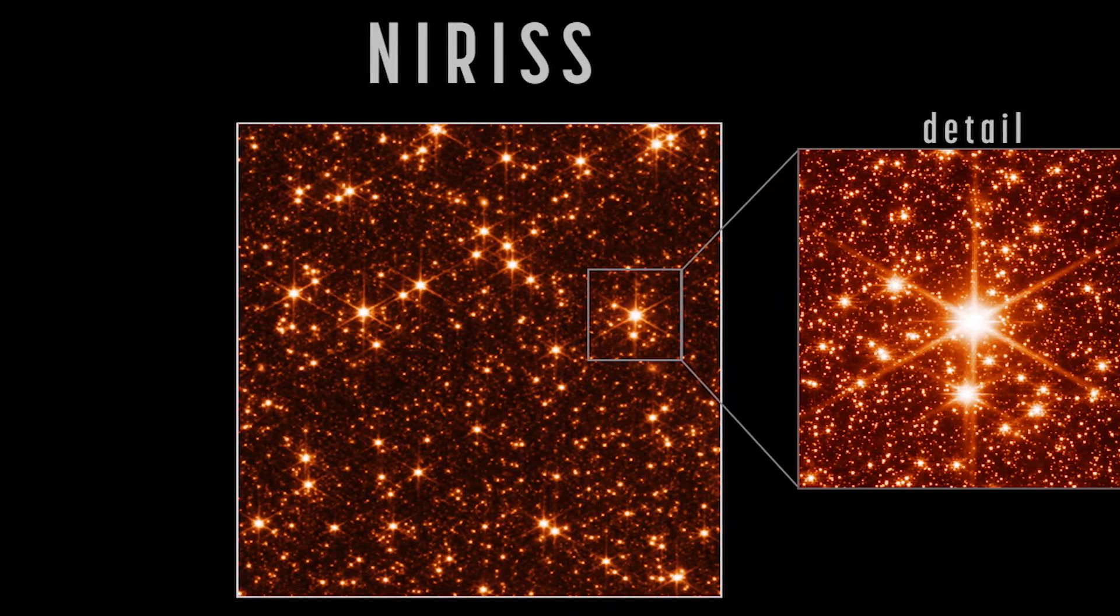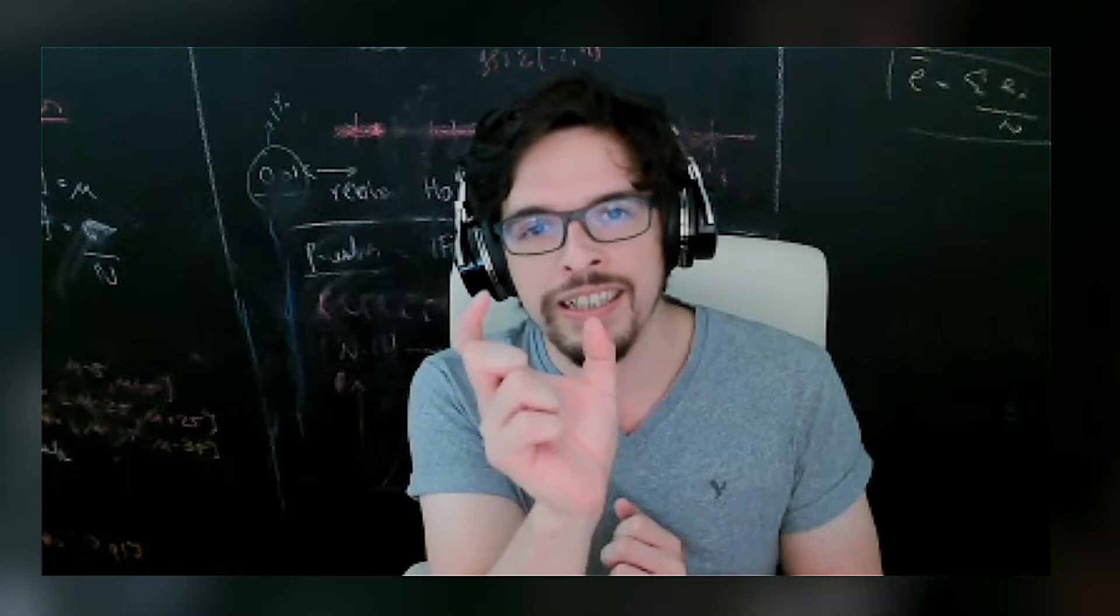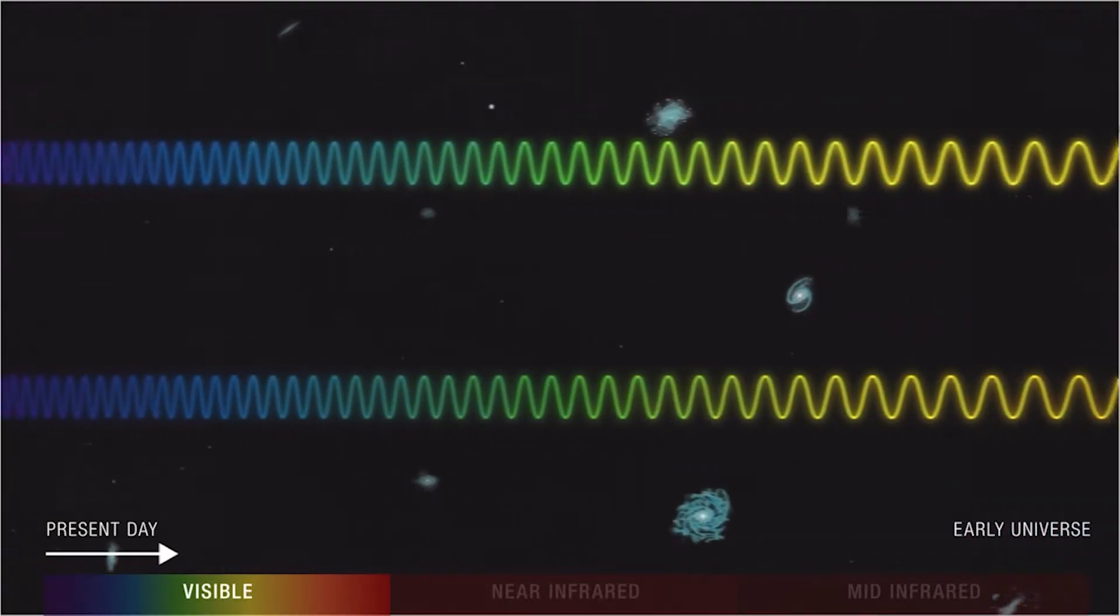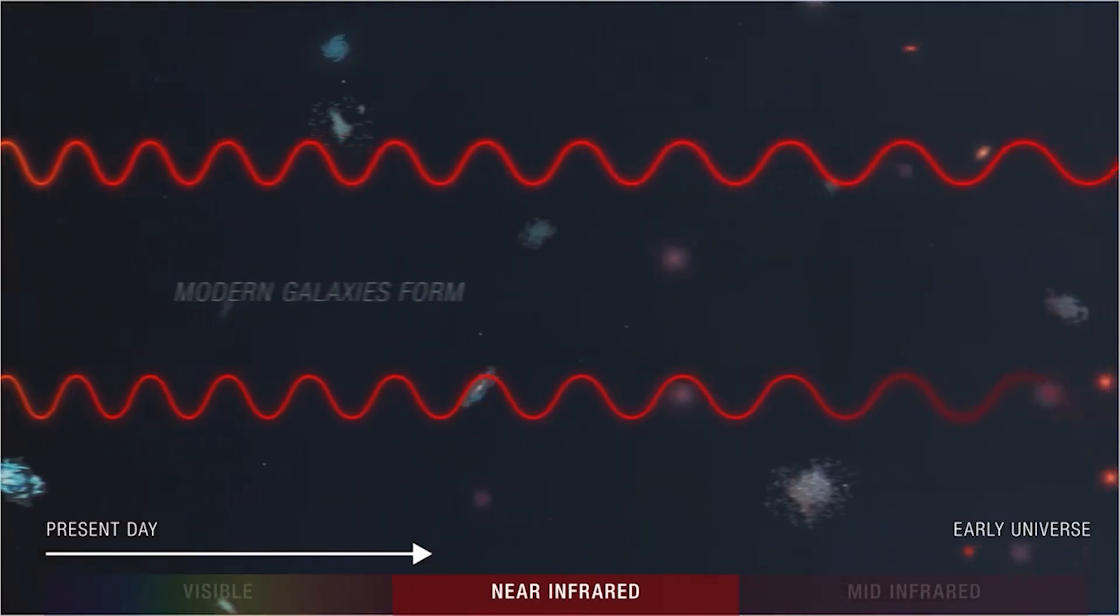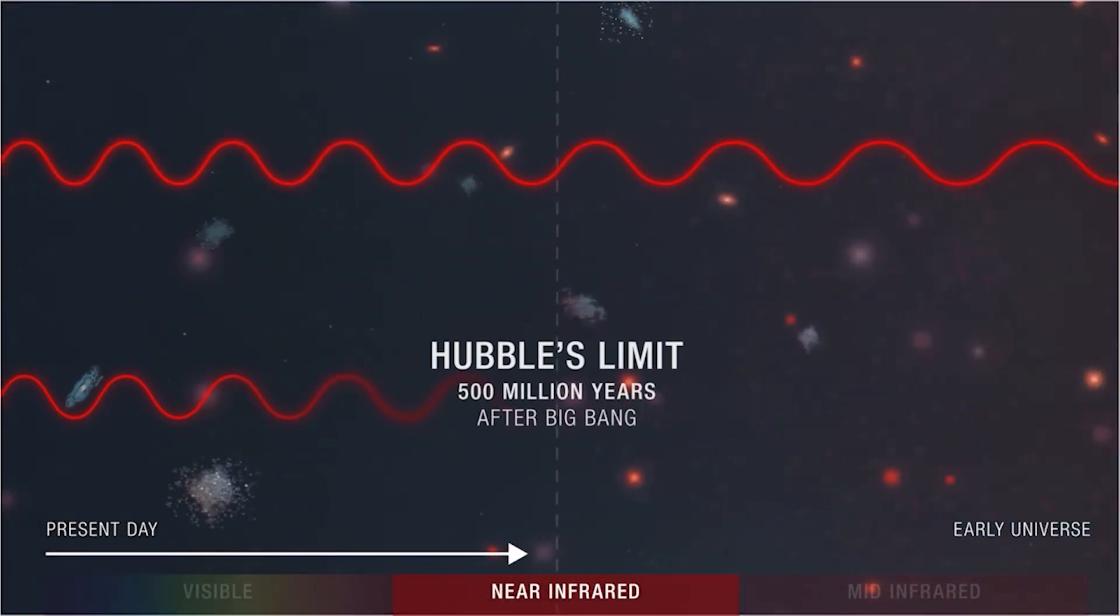The important part also in the NIRISS name is the very first part, which is the near-infrared. Infrared light is a little bit weird to us humans because we cannot see it. The beautiful thing of Webb is that it allows us to actually see into these colors that are invisible to our brains.